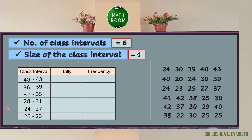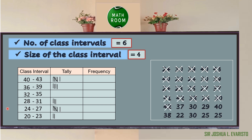We can now proceed with the tally. For example, 24 falls in the second class, 30 in the third class, 39 in the fifth class, 40 in the sixth class, and so on. After tallying, we write the frequency of each class by counting: 3, 8, 6, 0, 6, and 7.